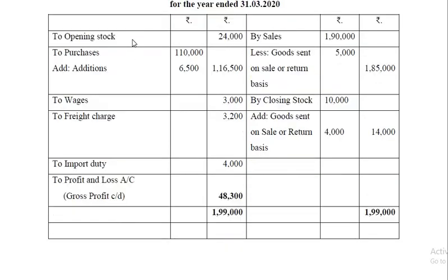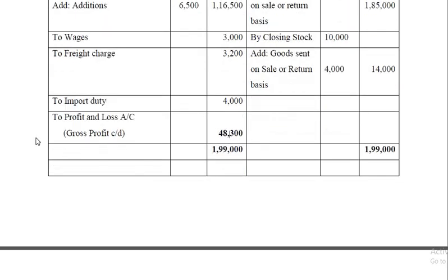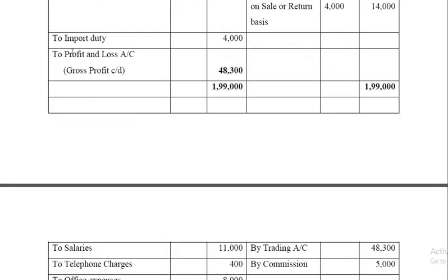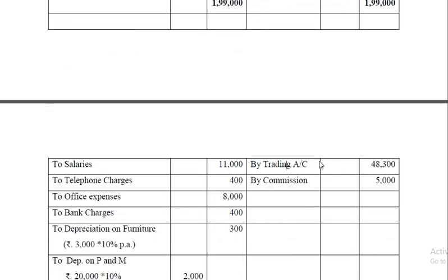Now the solution. In the trading account: opening stock, purchases plus unrecorded credit purchases, wages, freight charges 3,200, and import duty as a direct expense. On the credit side, sales minus goods sent on sale or return basis: selling price was cost 4,000 plus profit 1,000 equals 5,000, which is deducted. Closing stock is 10,000 plus the cost of goods sent on sale or return basis 4,000, giving total closing stock of 14,000. Balancing the trading account gives gross profit of 48,300, transferred to profit and loss account.